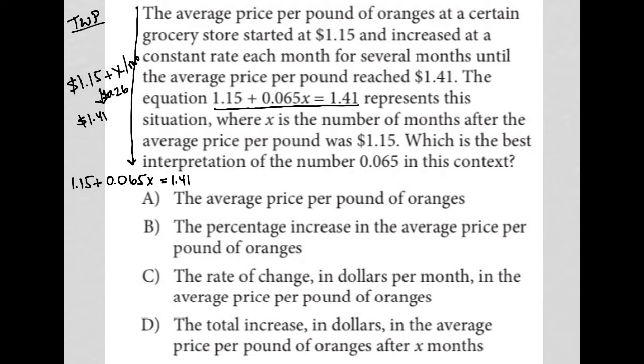Where X is the number of months after the average price per pound was $1.15. So obviously if we're multiplying 0.065 times X and we know that X is the number of months after the average price per pound was $1.15, that means we're multiplying this 0.065 each month. We're adding 0.065 each month or we are adding 6.5 cents per month.